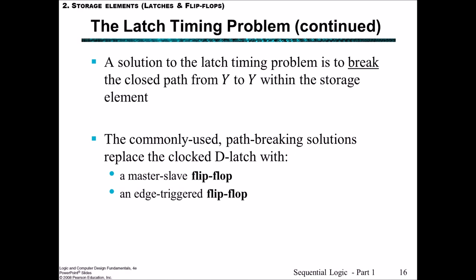A way to solve this latch timing problem is to break the closed path from Y to Y within the storage element — that is, whilst there's a clock tick of 1, we make sure that we only worry about things that happen either on the rising edge or the falling edge of the clock, not during that 1. The way to provide this path-breaking solution is to replace the clocked D latch with a master-slave flip-flop, which waits for one complete clock pulse, or an edge-triggered flip-flop, which waits for an edge — either a rising or a falling edge.